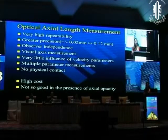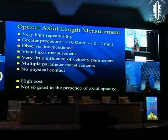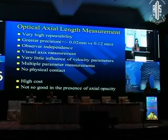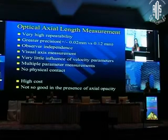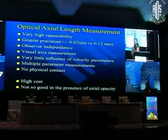As regards to optical biometry, we should be aware of the advantages and disadvantages and the basic principle. We are measuring the distance between the corneal vertex to the retinal pigment epithelium using infrared light. It has very high repeatability, is not dependent upon the observer, and precision is very high - almost plus or minus 0.02 mm. Measurements are always along the visual axis, and there is very little influence of sound velocity or refractive indices.